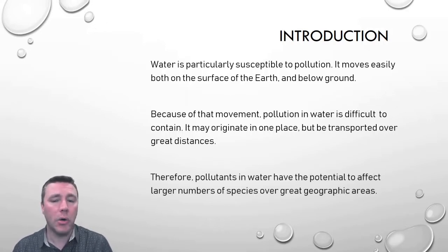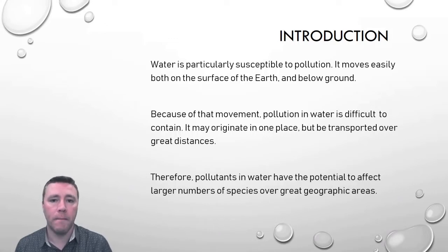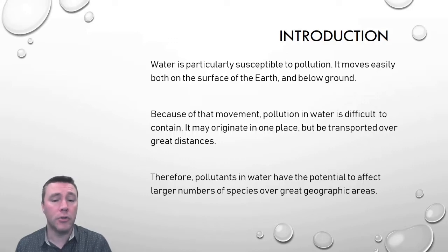That means, ultimately, that pollutants have the ability to affect a much greater geographical area because of their mobility. In this video, we're going to be taking a look at how certain kinds of pollutants, namely nutrients, can have dire consequences.